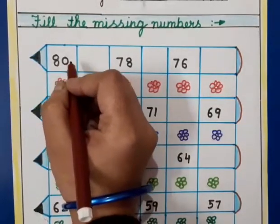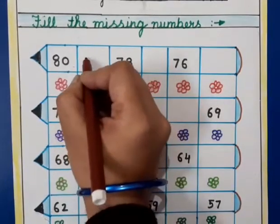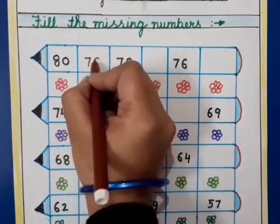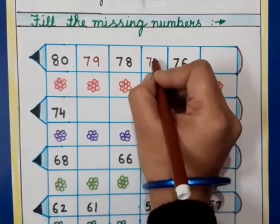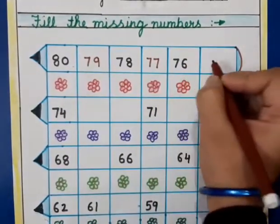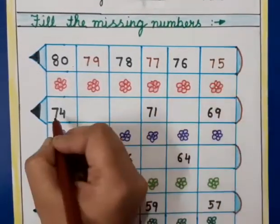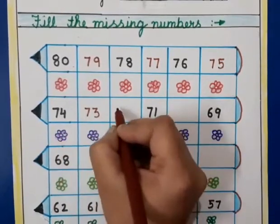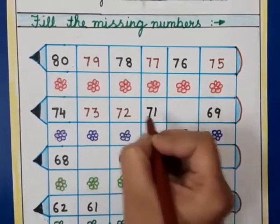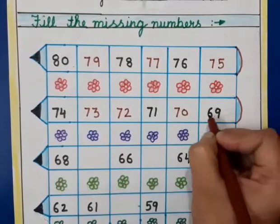This is 80. Then we will start the backward counting like this: 79, 78, 77, 76, 75, 74, 73, 72, 71, 70, 69.